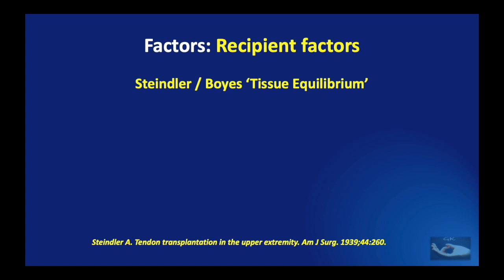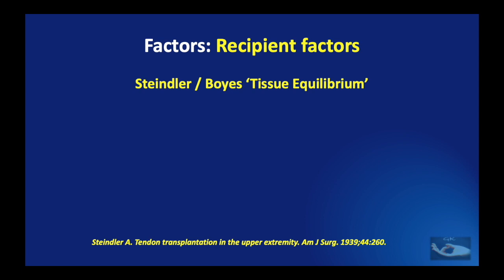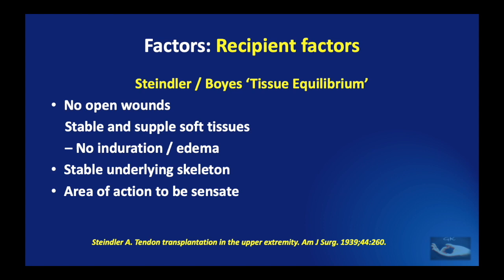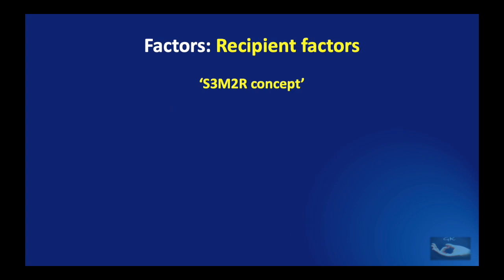The recipient here refers to the area where the tendon transfer is going to be done. The most important factor in the recipient area is that the tissue equilibrium, as described by Stengler and Boyes, should be achieved. This means there should be no open wounds, stable and supple soft tissues with no evidence of induration or edema, a stable underlying skeleton, the area of action should be sensate, and the joints to be powered must have a full passive range of movement. This corresponds to the S3 M2R concept described in an earlier video.